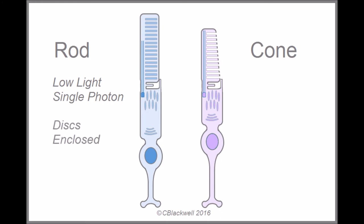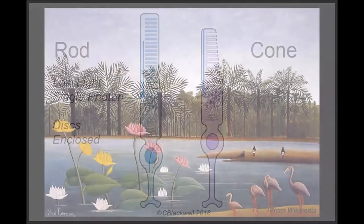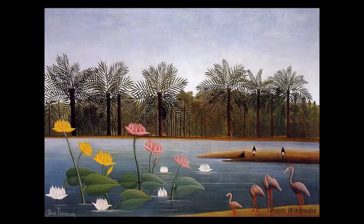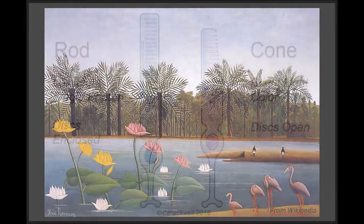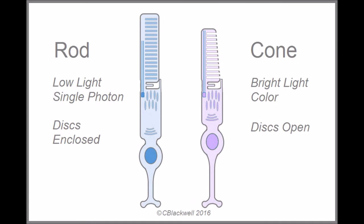Structurally, rod discs are enclosed completely within the plasma membrane of the outer segment. Cones work in bright light and serve color vision. Structurally, the cone discs are open to the extracellular space.